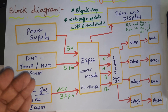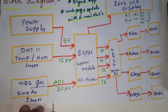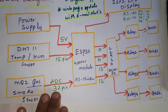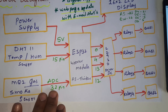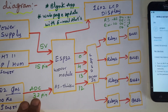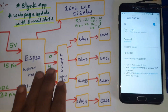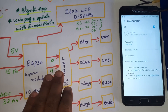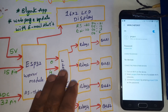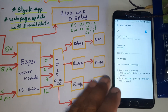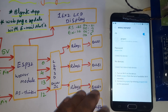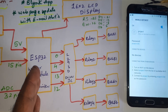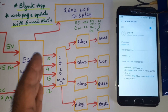As well as a web page and email alerts. The MQ2 gas sensor, also a smoke sensor, is connected to the ADC pin 32. There is an L293D quadruple H-bridge driver IC to control the relay coil. The ESP32 operates at 3.3 volts.